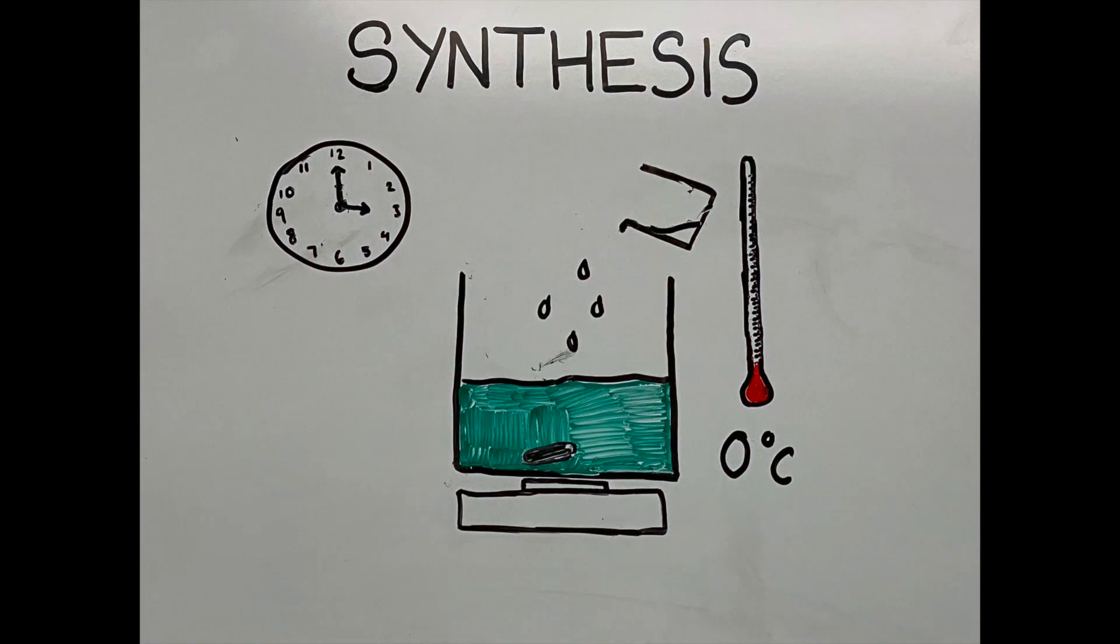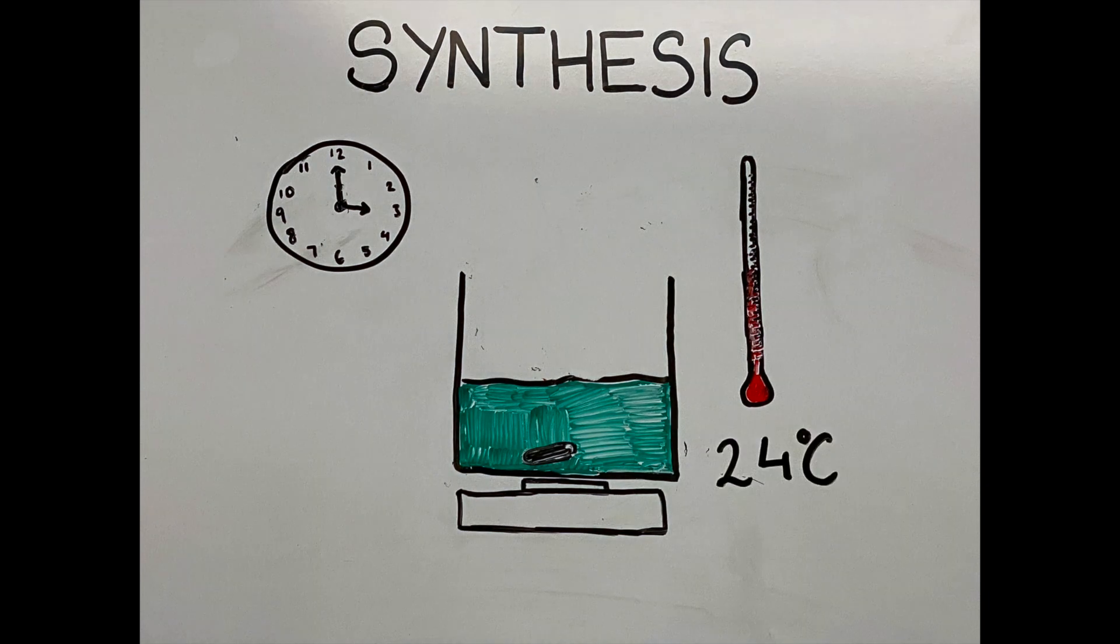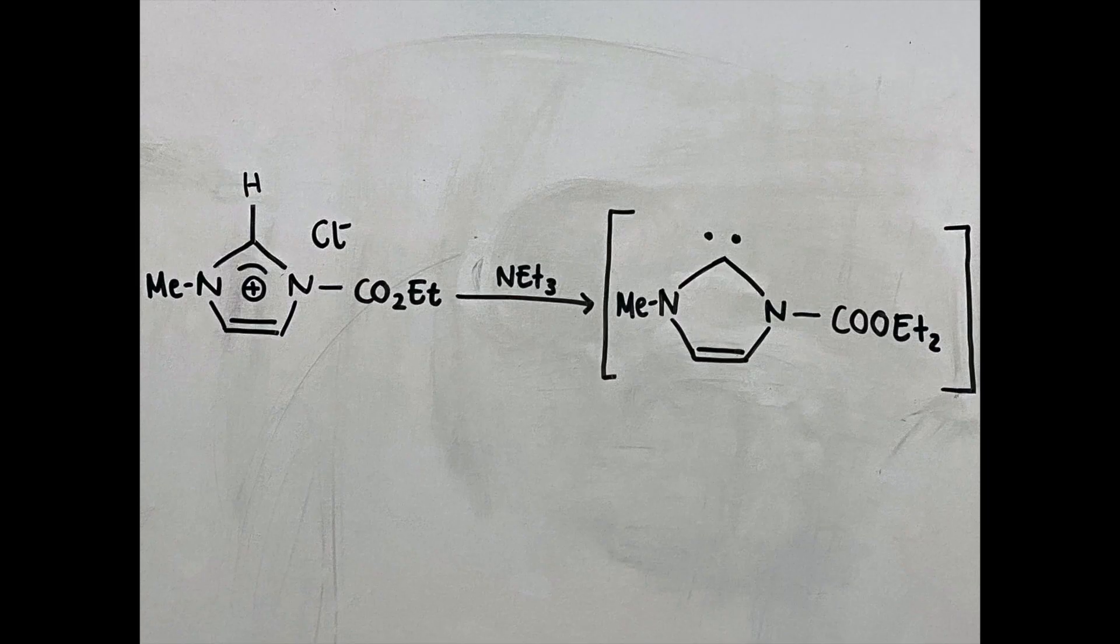Triethyl amine is added to the imidazolium salts produced in the first step. The solution is then allowed to reach room temperature around 24 degrees and is stirred for three hours, to produce N-heterocyclic carbenes, or NHC.